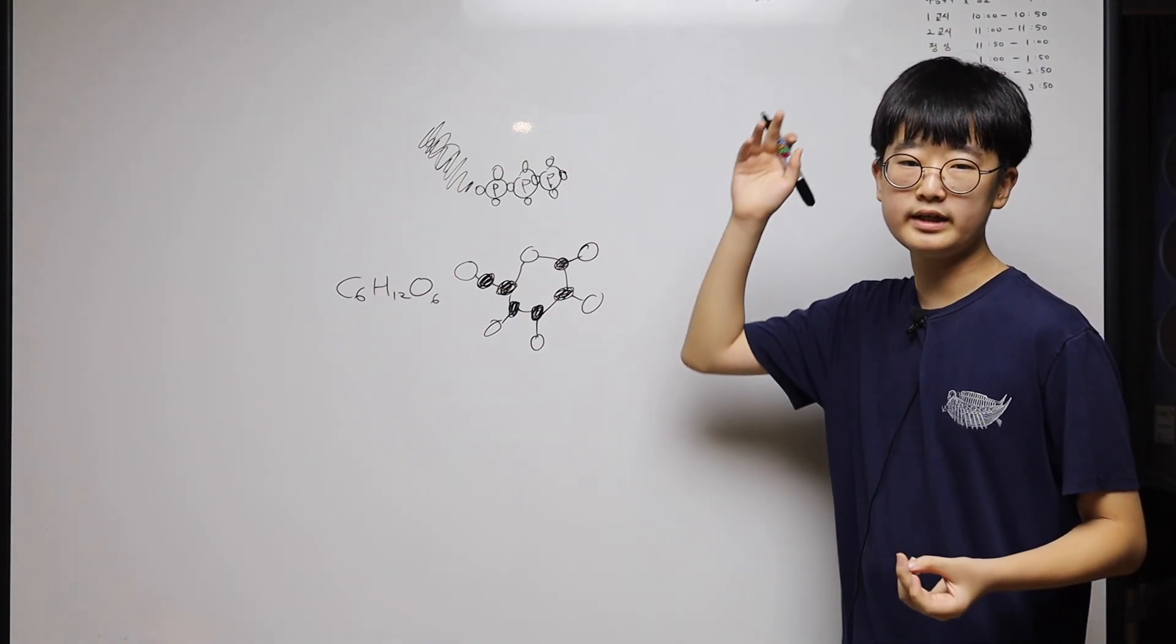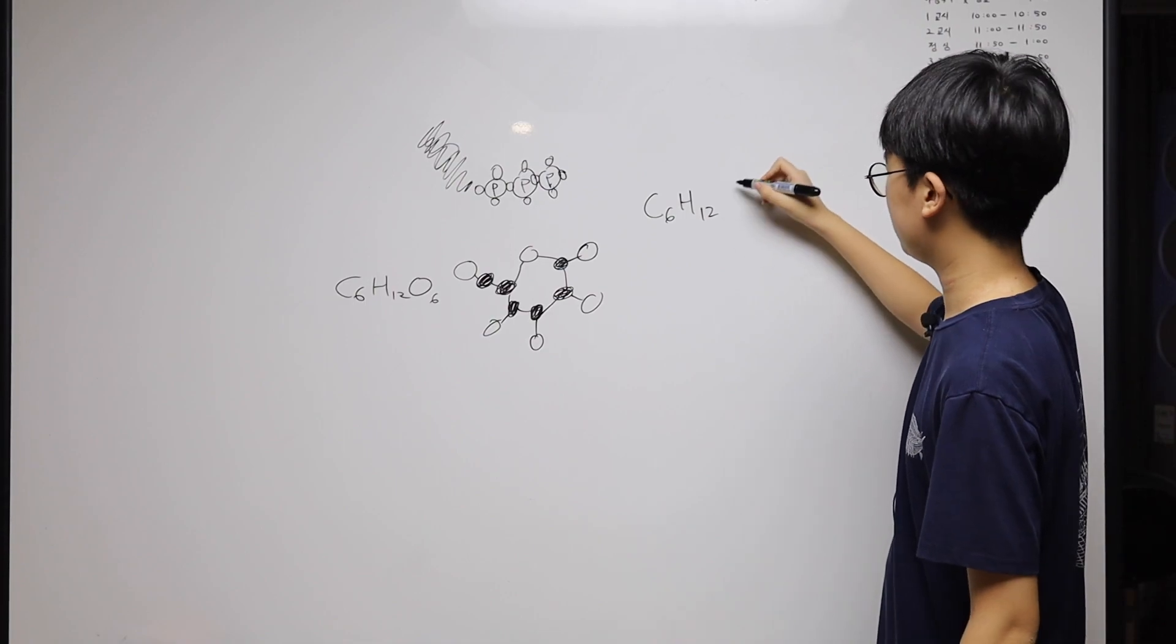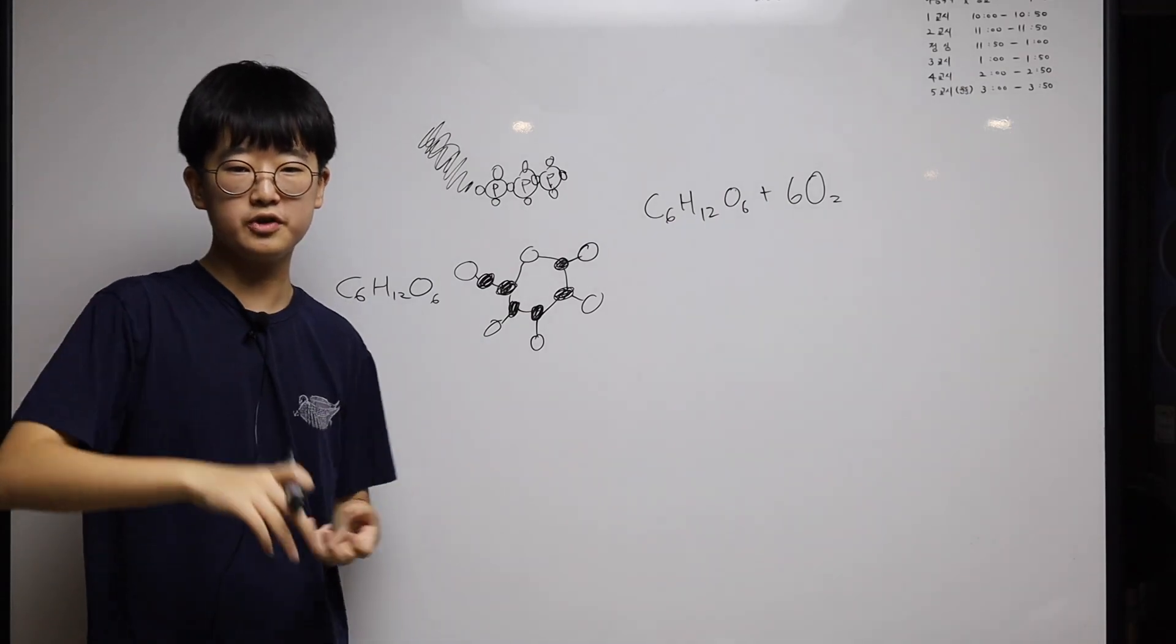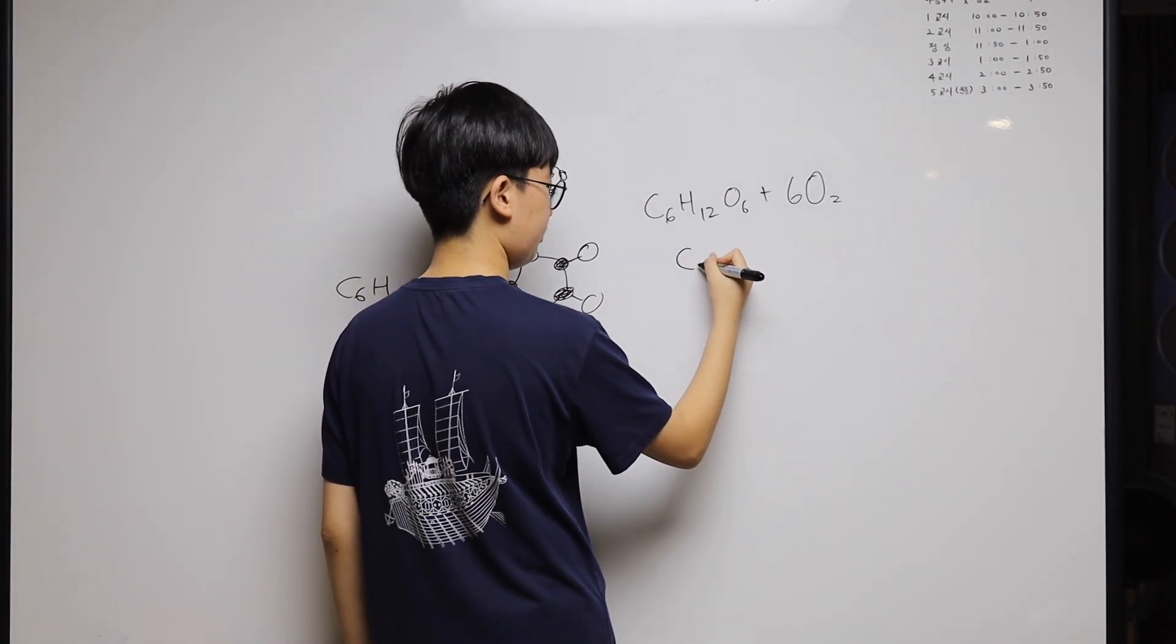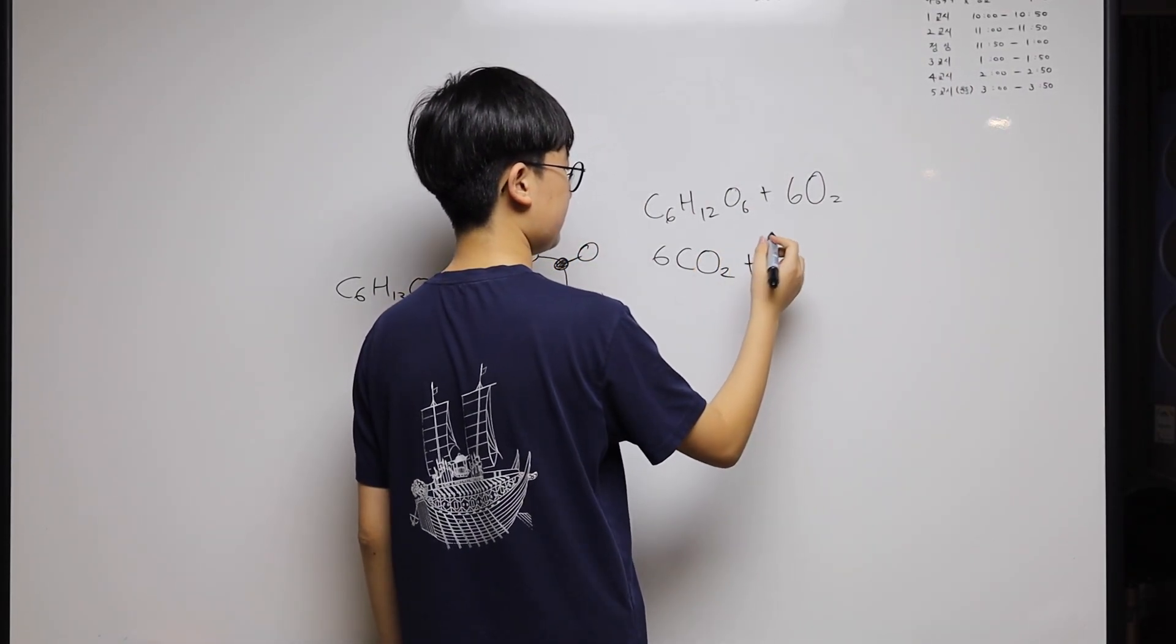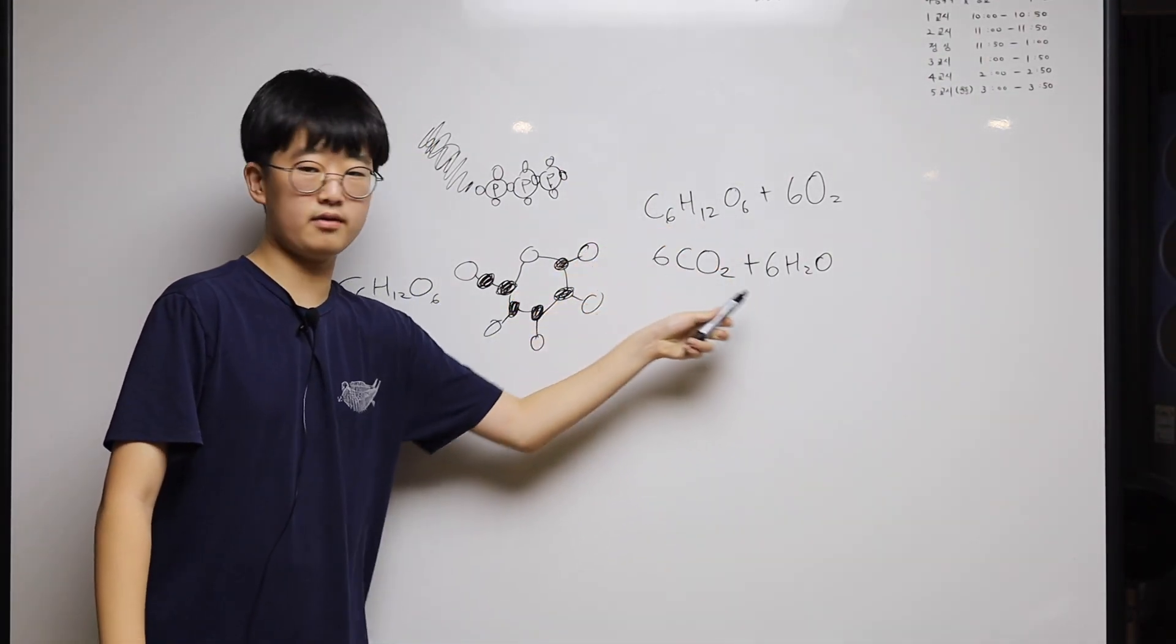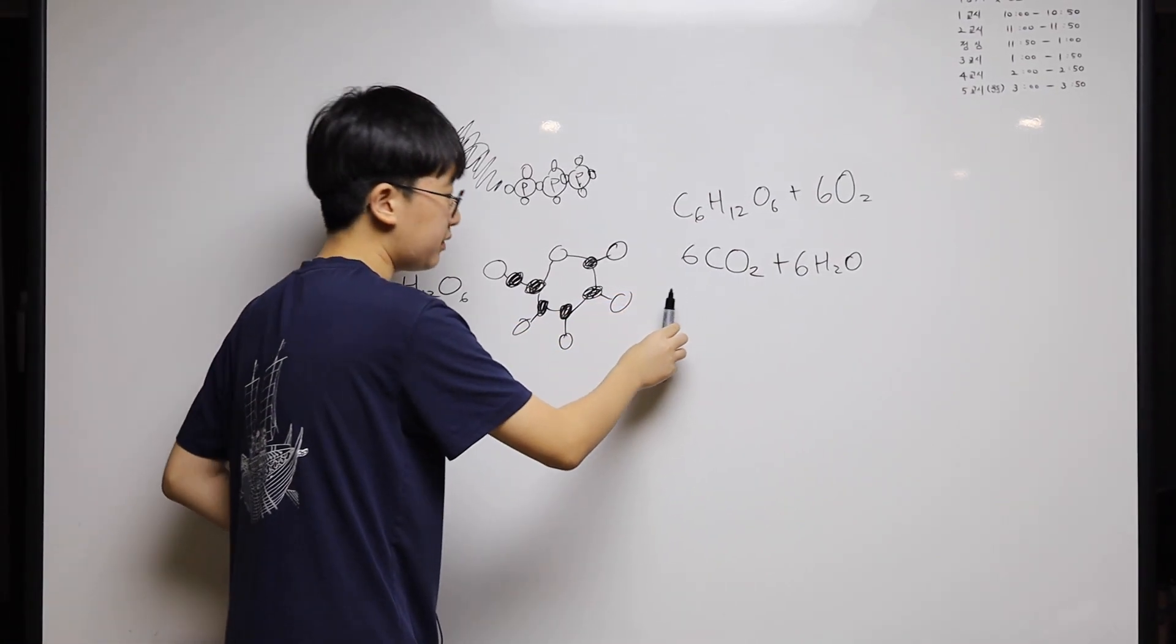While we make ATP, we use glucose and turn it into carbon dioxide and water like this. Here is glucose - C6H12O6 - and add six O2s into it. O2, the oxygen we breathe. And then what happens is this turns into six carbon dioxide and six water molecules.